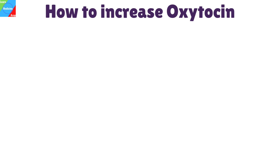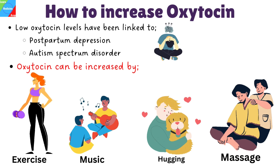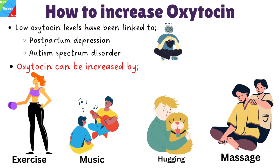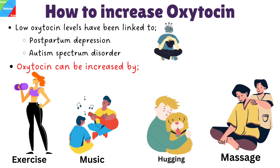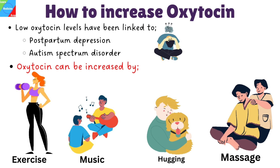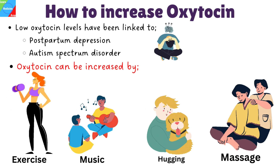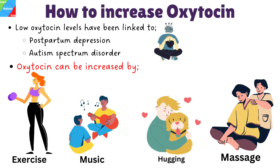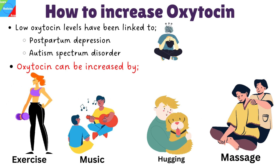How can you increase oxytocin levels? Low oxytocin levels have been linked to symptoms of depression, including postpartum depression, and have also been linked to autism spectrum disorder. For this reason, it is necessary to learn how to boost oxytocin naturally. Exercise is one of the simplest ways to increase oxytocin levels. Additionally, music can boost oxytocin levels — in particular when people sing together as a group, which adds a bonding factor. Simple acts of touching such as hugging, cuddling, and giving a massage also lead to increased oxytocin production.